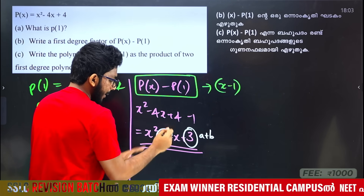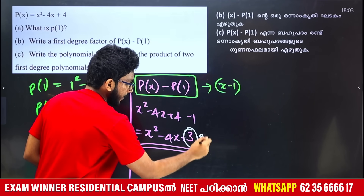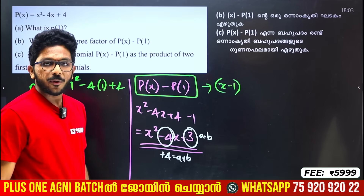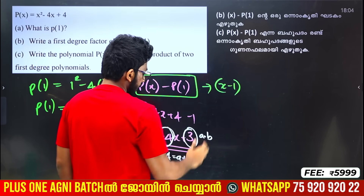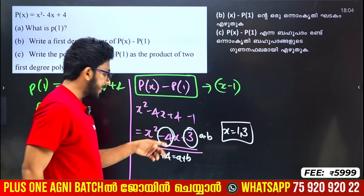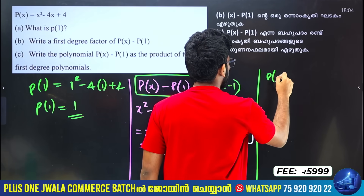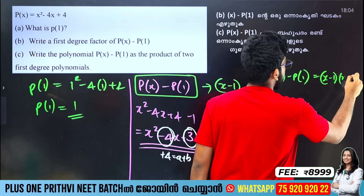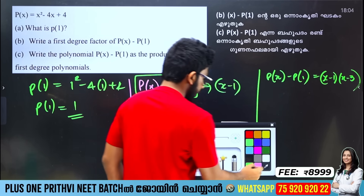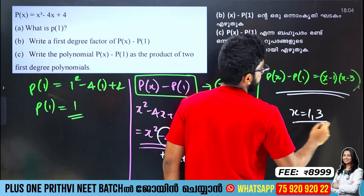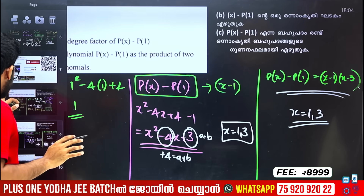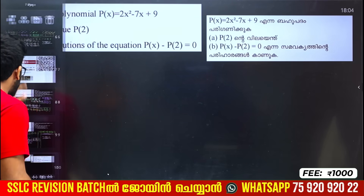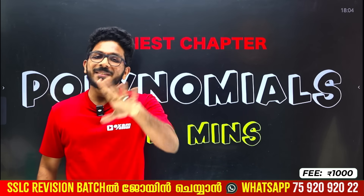The number equals a plus b, that means minus 4 — the opposite is 4. And a into b equals 3. If we multiply 1 into 3 we get 3, and 1 plus 3 equals 4, so x equals 1 and x equals 3. Therefore P of x minus P of 1 equals x minus 1 into x minus 3. That is a chapter summary — this covers all types of questions.